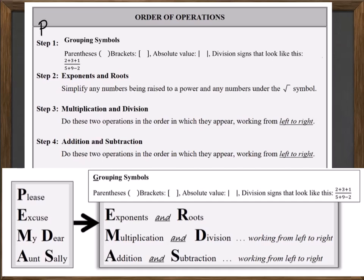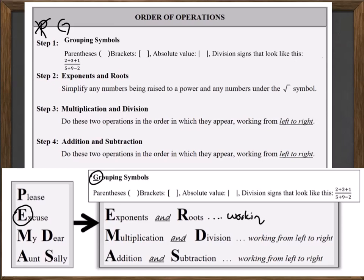So that is the first change we need to make. Instead of P, now we're going to use G. For step two — the 'excuse' or the exponents — we need step two to include both exponents and roots. They're on the same line, which means they have the same level of precedence, working from left to right. So step two, instead of just being E, is going to be ER.